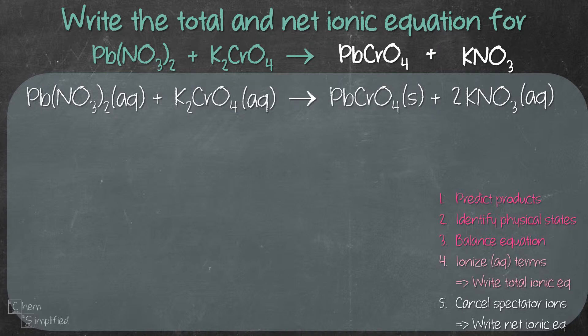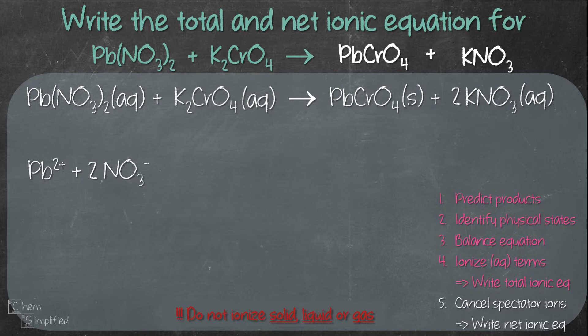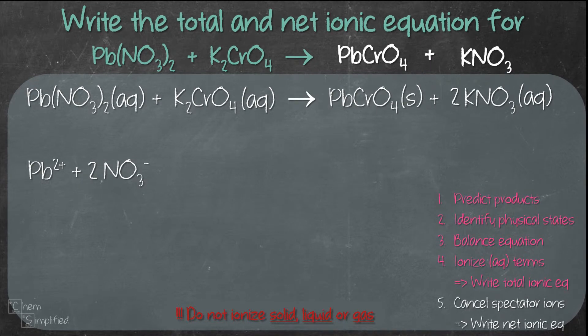Step 4, we need to ionize the aqueous terms. That means we break any aqueous terms into ions. It's important to note that we only do that for aqueous terms. We leave solid, liquid, and gas terms alone. Starting with the first term, Pb(NO₃)₂, since it's aqueous, it will break into Pb²⁺ and 2NO₃⁻. The reason we have a 2 in front of NO₃⁻ is because of the subscript 2.